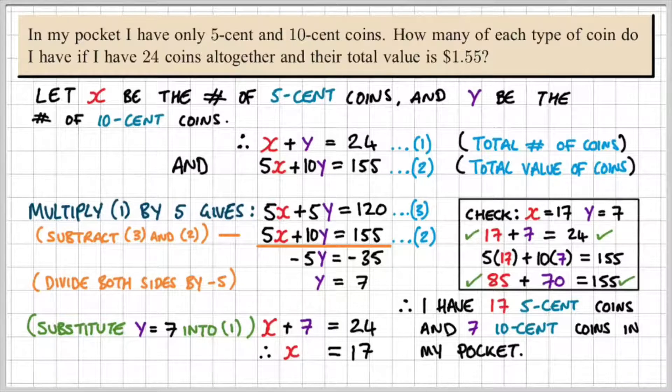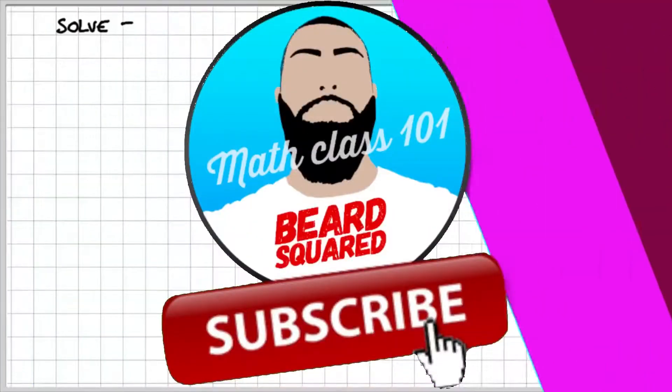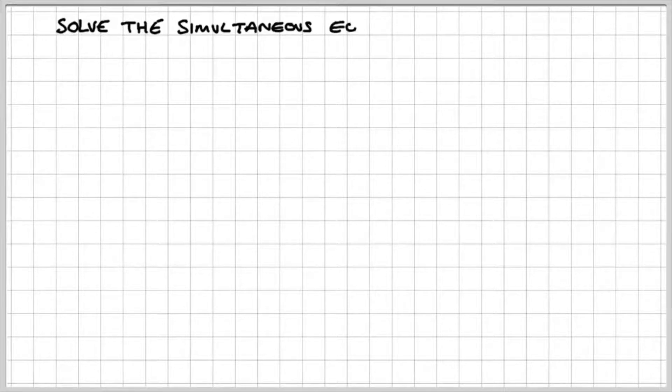Okay, stay tuned because the next example is going to show that we need to manipulate both of the equations in order to eliminate and solve a set of simultaneous equations. So in the following question, it says solve the simultaneous equations. And we have 5x plus 3y is equal to 9.